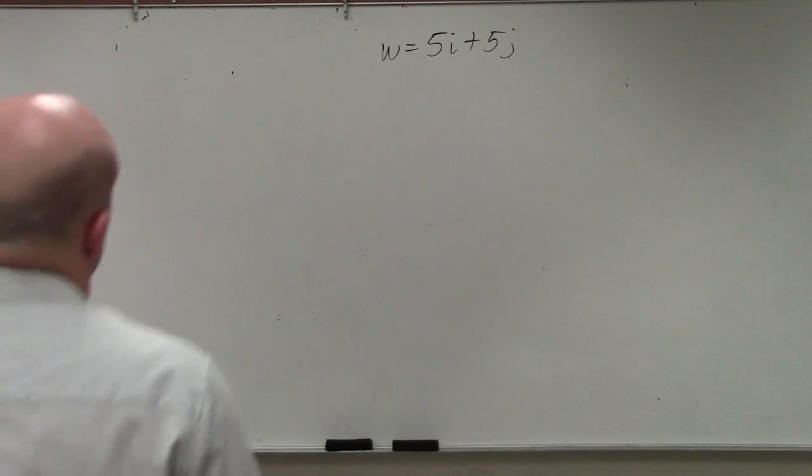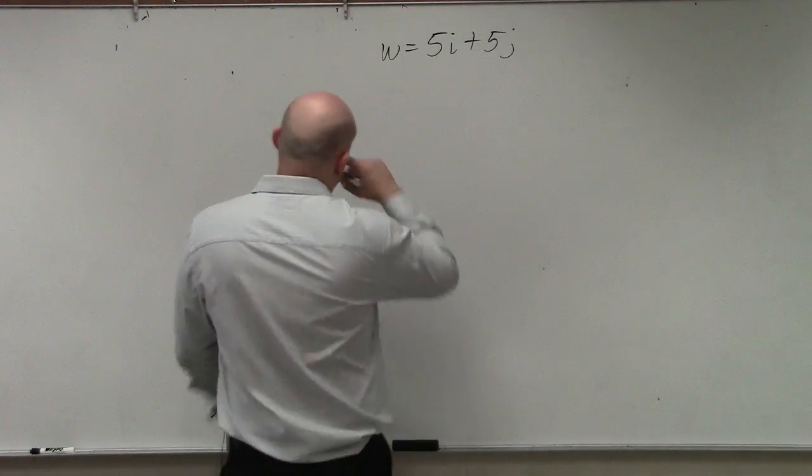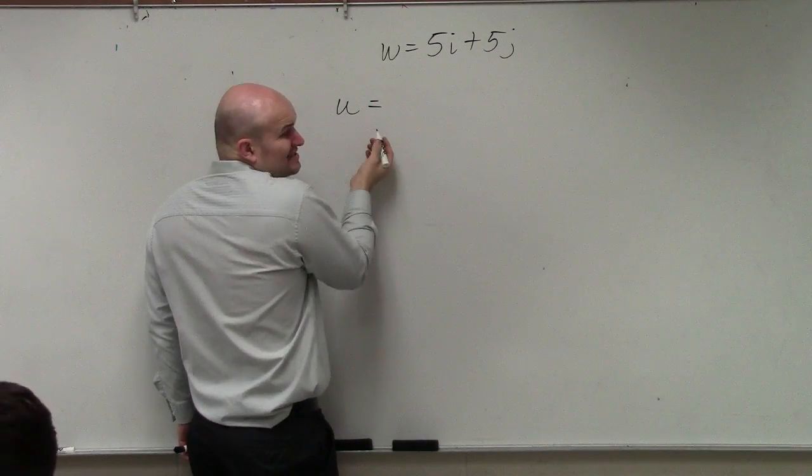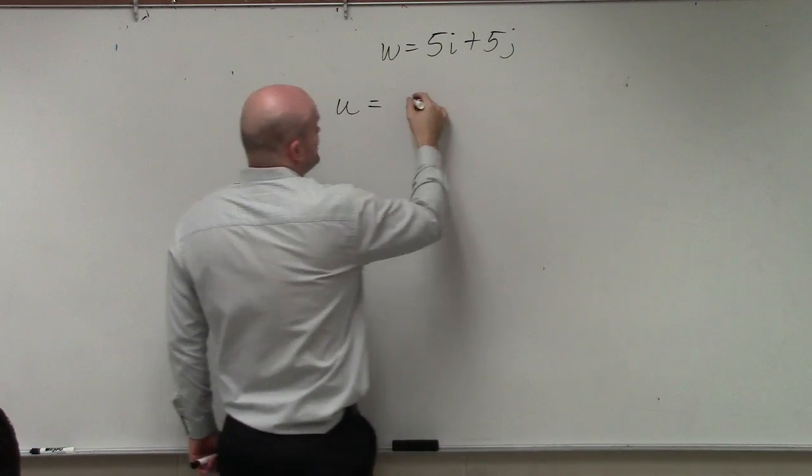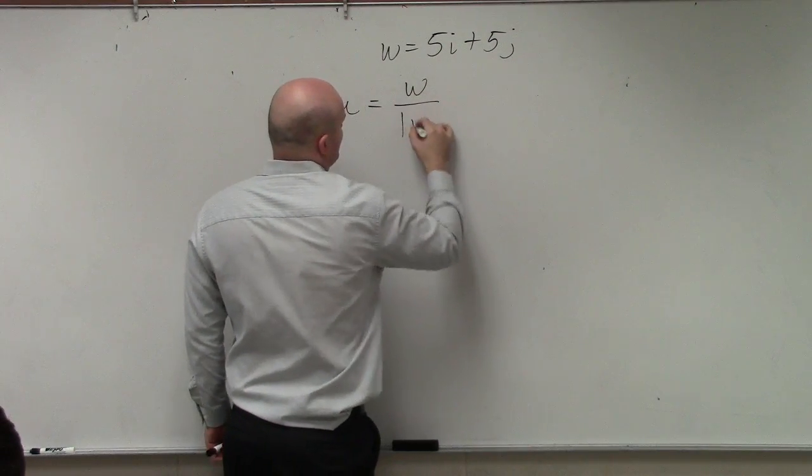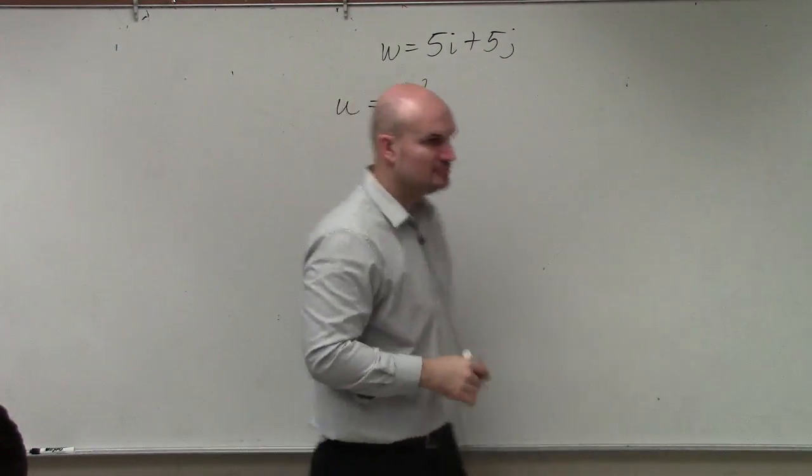So for 5i plus 5j, basically, if you guys remember the unit vector, the unit vector of w—instead of v in our notes, we're now going to use w—is basically just going to be the vector w over the magnitude of w, right?